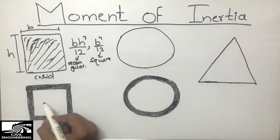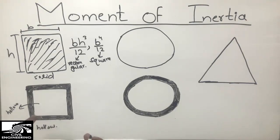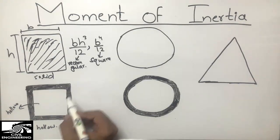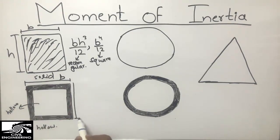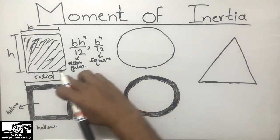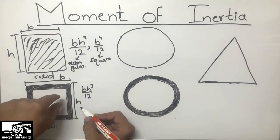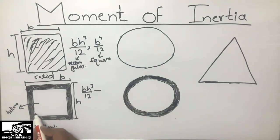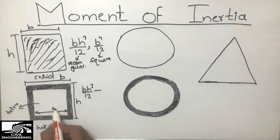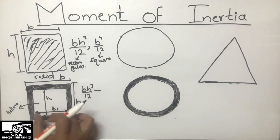Now I'm going to show the hollow rectangular beam, where the inner hollow portion is indicated. For the hollow rectangular beam, the outer width is b and the outer depth is h, so the outer moment of inertia is bh³/12. But we need to subtract the hollow area. The inner width is b1 and the inner depth is h1.